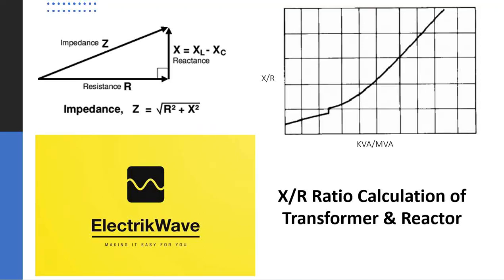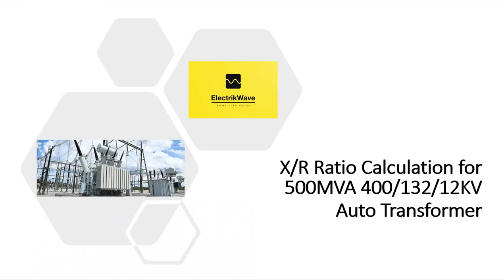Welcome. Let's understand X by R ratio calculation of transformer and shunt reactor. Let's start with a discussion about the X by R ratio calculation for a 500 MVA, 400 by 132 by 12 kV auto transformer.